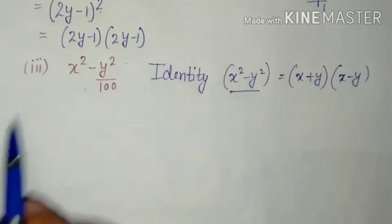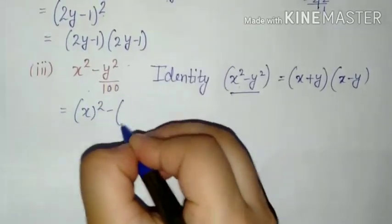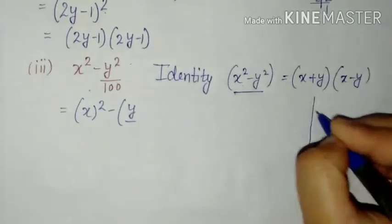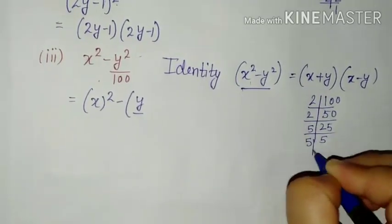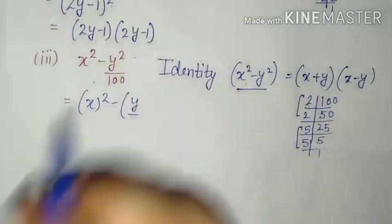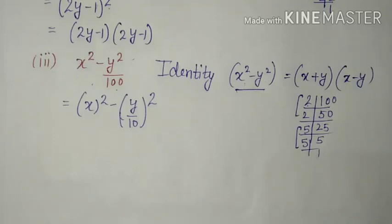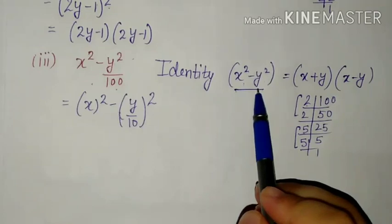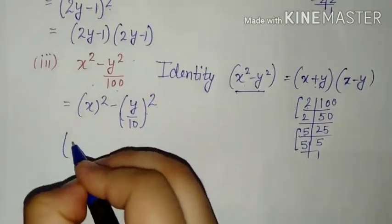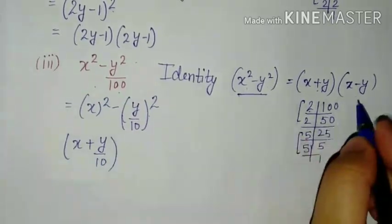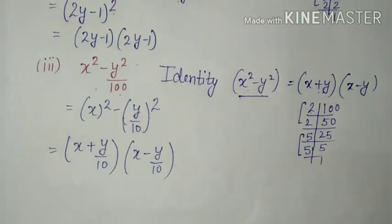Ab left hand side mein dono terms kisi na kisi ka square hain. To hum pehle check karenge ki yeh dono terms kiska square hai. X ka square ho jaega yeh. Minus — ab y ka to humhe pata hai woh y ka square hai y. Aur niche hundred hai. Hundred ko check karte hain: 2×50, 5×20, 5×5=25 — 5 ka pair ban raha hai, 10×10=100 — 10 ka pair ban raha hai. So 100 kiska square hai? 10 ka. So upon mein 10, all square: y²/100 = (y/10)². So we have two terms. Left hand side x² minus y²/100, right hand side: (x + y/10)(x − y/10). X ki jagah x, y ki jagah y/10. Degree 2 hai to factors bhi 2 hi honge.